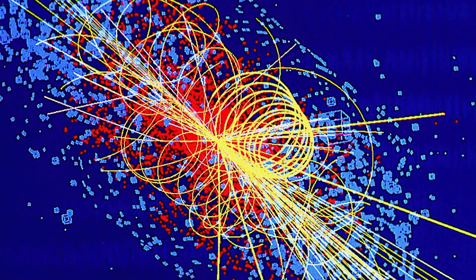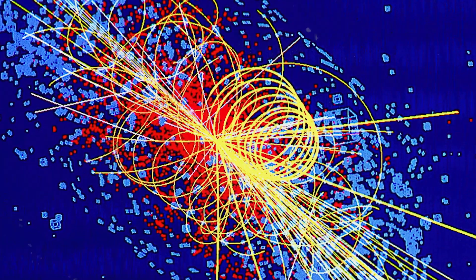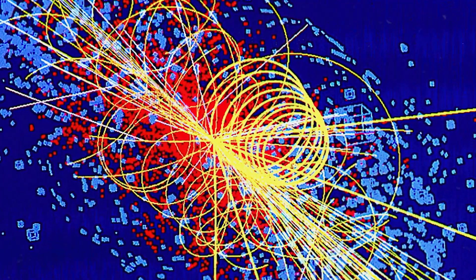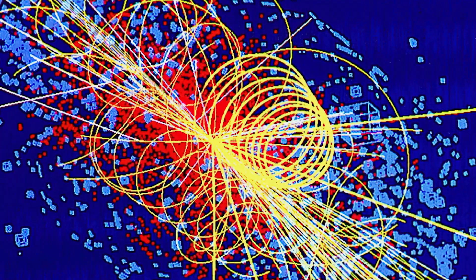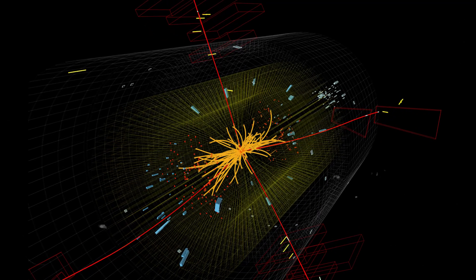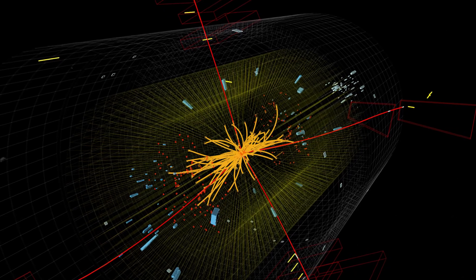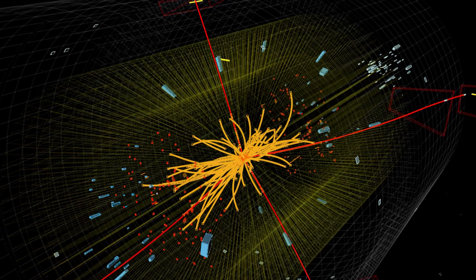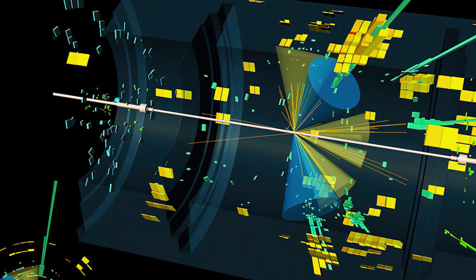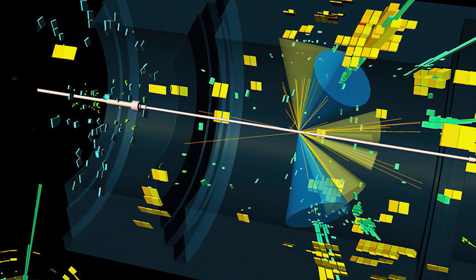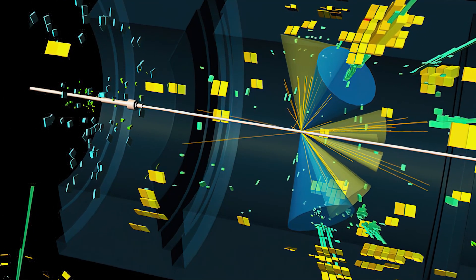But there is much more still to learn about this elusive particle. Is it one of a kind or is there a whole Higgs sector of particles? Does it help to explain how the universe was formed, with matter triumphing over antimatter? Does it get its mass by interacting with itself in some way? And why is its mass so small, suggesting the existence of a whole new mechanism? Could dark matter and other new particles be found thanks to interactions with the Higgs boson?